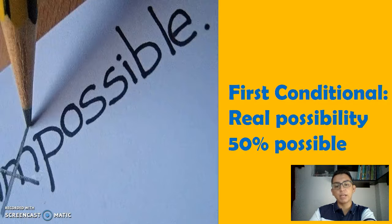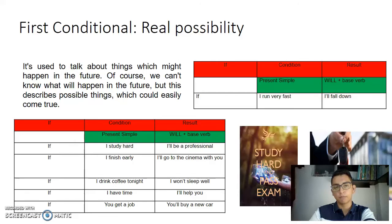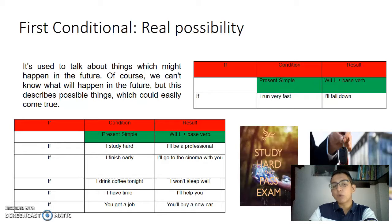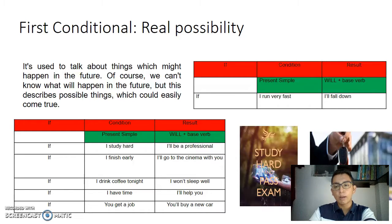First conditional: real possibility, 50% possible. It is necessary to talk about things which might happen in the future. It describes possible things which could easily come true. In the condition it is necessary to use the present simple tense, and in the result it is necessary to use will plus the base verb.